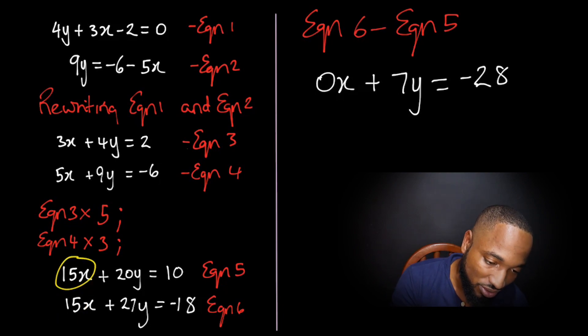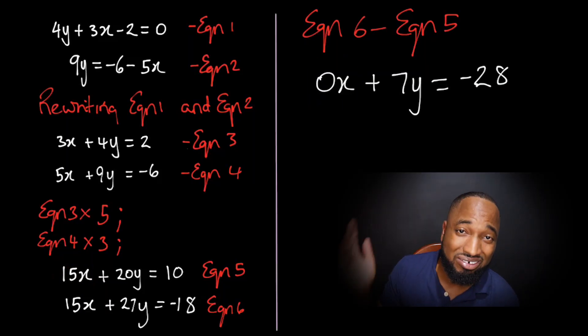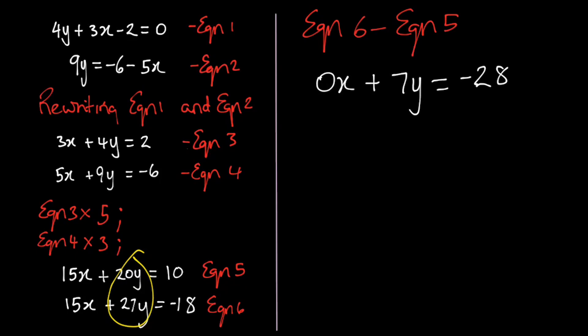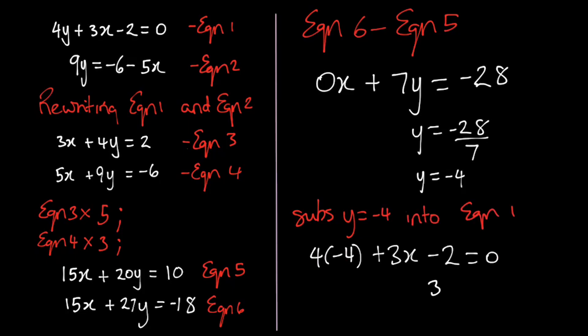27 take away 20y—27y take away 20y is 7y. And negative 18 take away 10 is negative 28. Work it out: you get y is equal to negative 4. Substitute into equation 1, and lo and behold you get the x value. That's the answer.